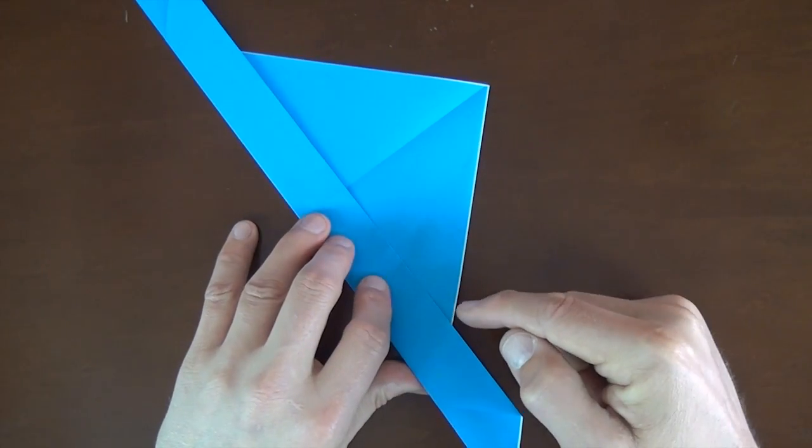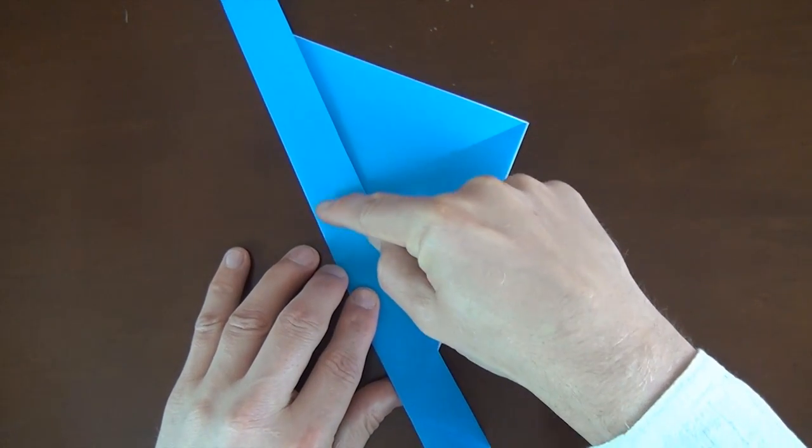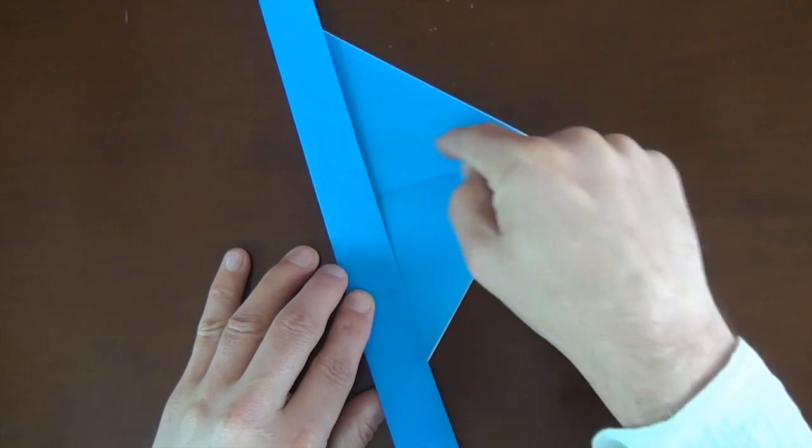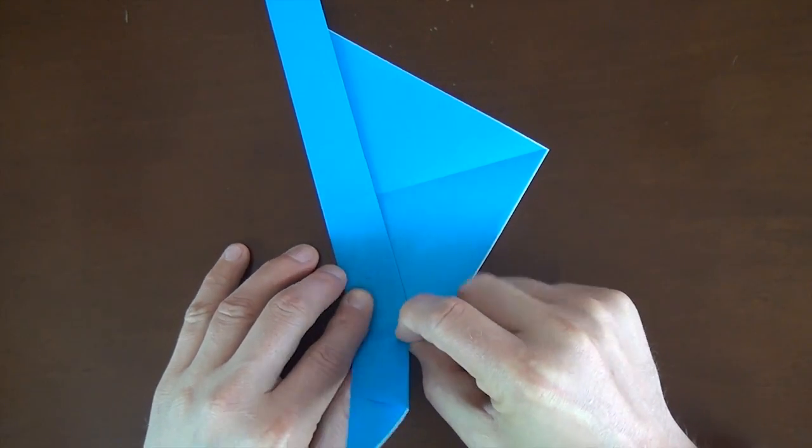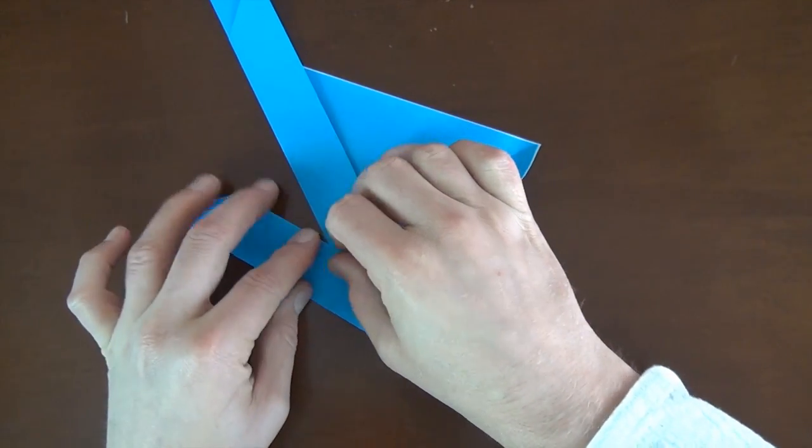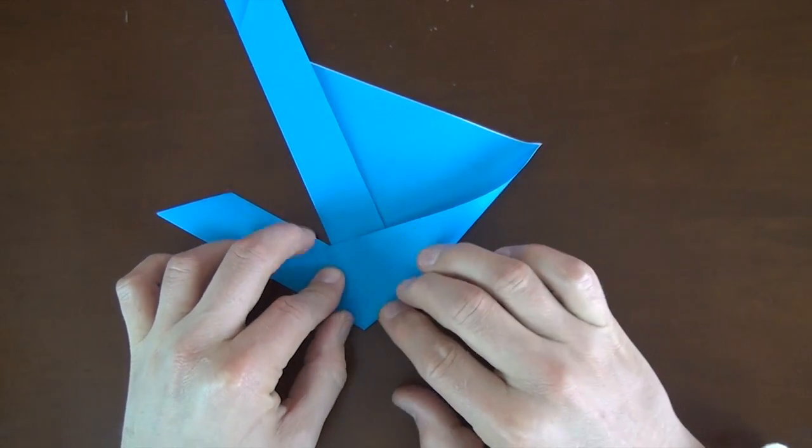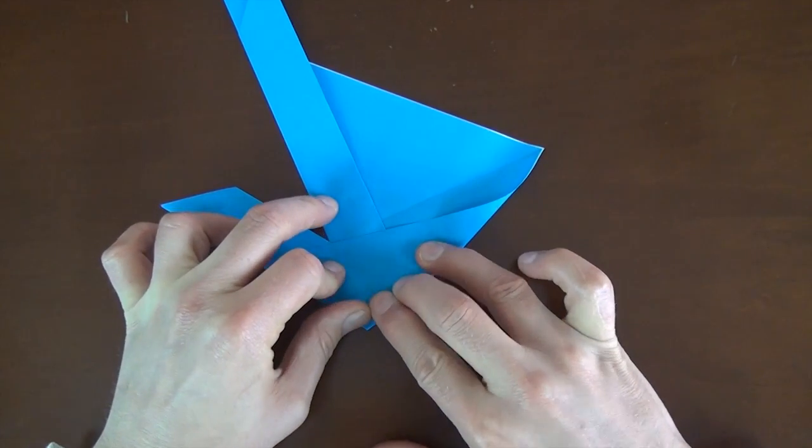And now we're going to fold this flat so that this point touches the midpoint of this edge. So where this crease hits this edge, we're going to fold this point right to that point. Right there. And crease.